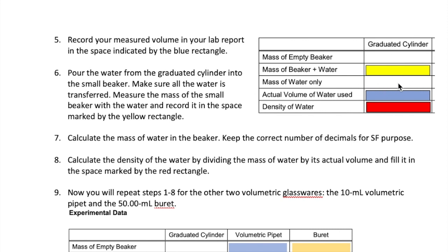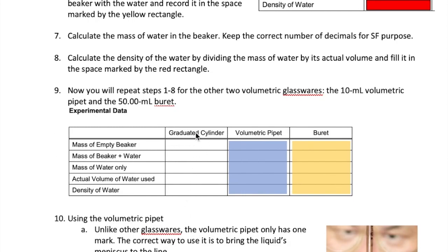You can then calculate the mass of just the water by subtracting the mass of the beaker plus water from the mass of the empty beaker. Once you have the mass of the water and the volume of the water, you can divide one by the other one to get the density of the water. You want to make sure that your final density value has the correct number of significant figures based on the significant figures of these two measurements right here. So what you just did is finish filling in the values for the first column of part A, which is for using the graduated cylinder to measure the volume of the water. In the next video, I will describe the other two devices that you're going to use to measure the volume for this portion of the lab.